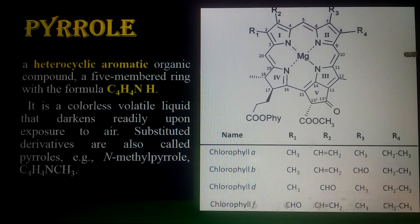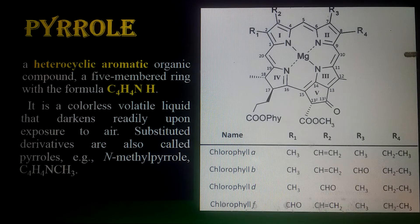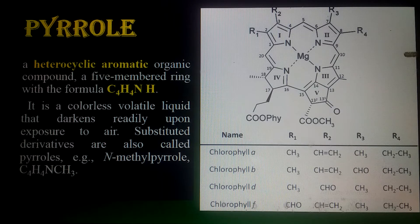Pyrrole is a colorless volatile liquid that darkens rapidly upon exposure to air — this darkening gives it color. Substituted derivatives are also called pyroles, for example methyl pyrrole. I will show you the difference between chlorophyll a and chlorophyll b.